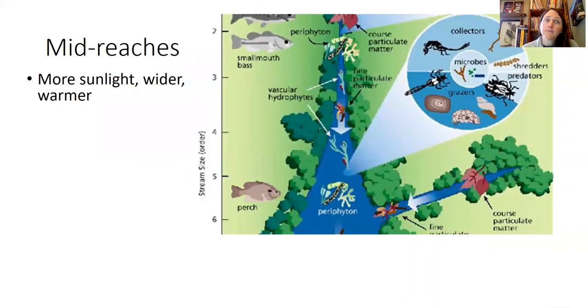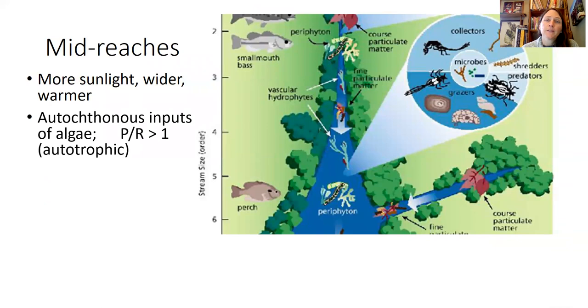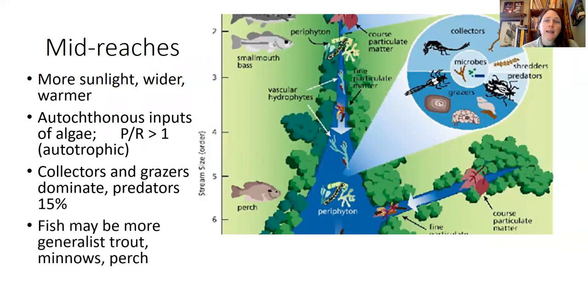Moving into the mid reaches, you have more sunlight, wider streams, warmer water, and you're more dominated by autochthonous inputs of algae. Because of this, you have a P to R ratio that's greater than one, so a net autotrophic system for the most part. You're dominated by collectors and grazers, again with about 15 percent predators. Your fish might have more generalists like trout, minnows, and perch.